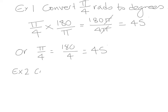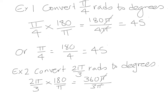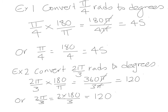Example 2: convert 2 pi over 3 radians to degrees. Method one: 2 pi over 3 times 180 over pi gives 360 pi over 3 pi — the pi's cancel and we get 120 degrees. Method two: replace pi with 180, giving 2 times 180 over 3, which also gives 120 degrees. Both methods give the same answer.